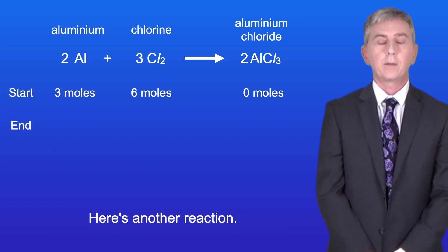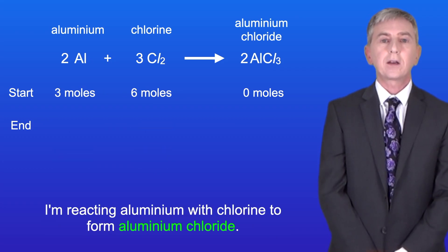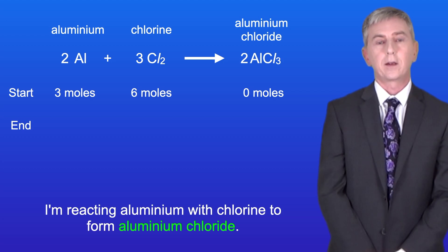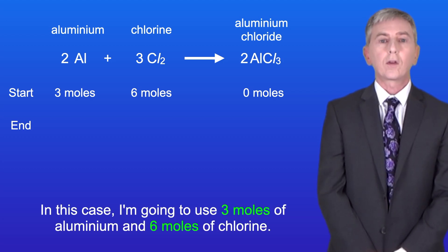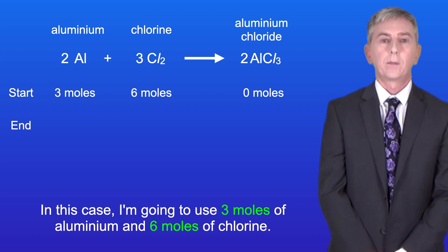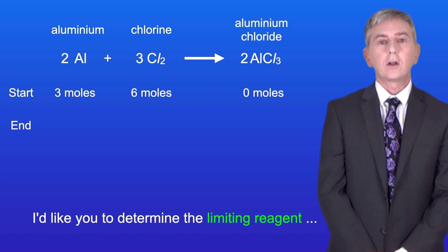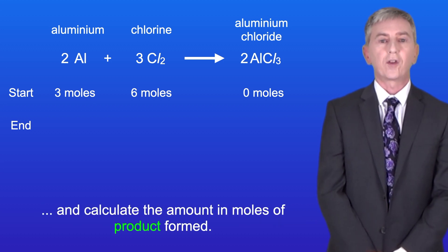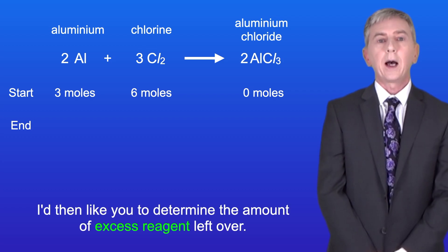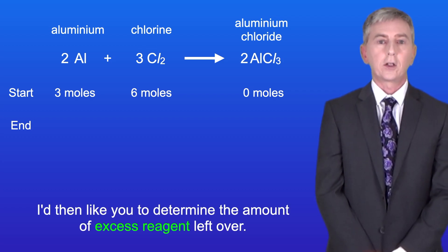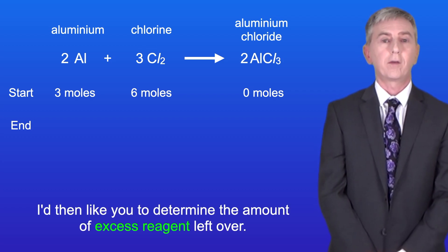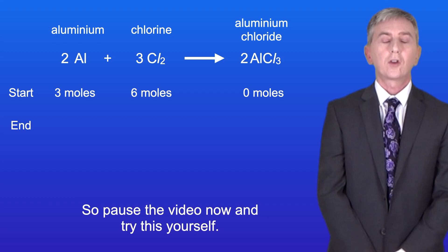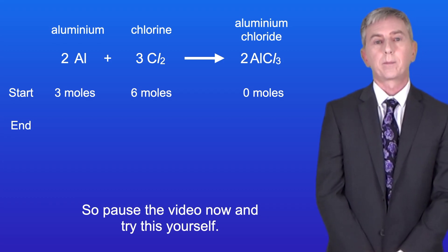Here's another reaction — I'm reacting aluminium with chlorine to form aluminium chloride. In this case I'm going to use 3 moles of aluminium and 6 moles of chlorine. I'd like you to determine the limiting reagent and calculate the amount in moles of product formed, then determine the amount of excess reagent left over. Pause the video now and try this yourself.